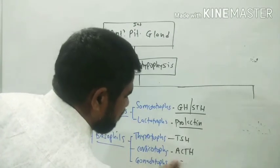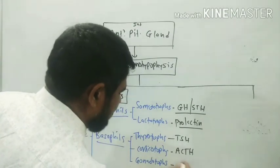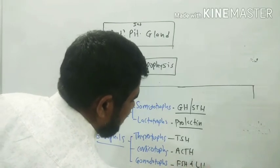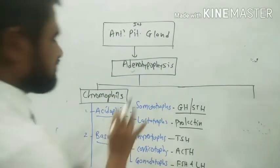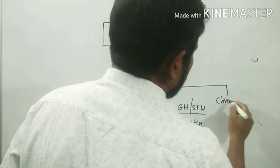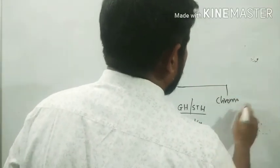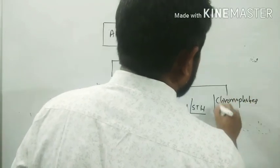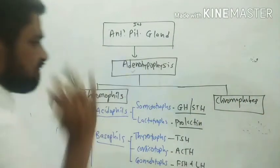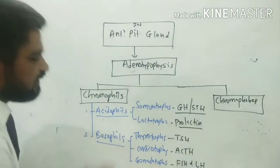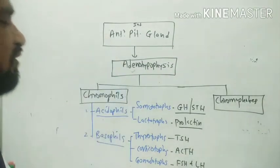Gonadotropes produce FSH (follicle-stimulating hormone) and LH (luteinizing hormone). There are also some cells that do not produce any hormones — these are called chromophobes. Chromophobes are non-functional cells in the pituitary gland. This completes the internal structure of the pituitary gland.